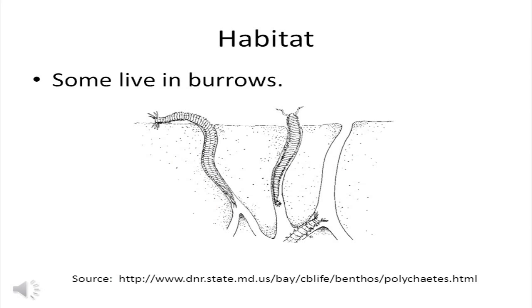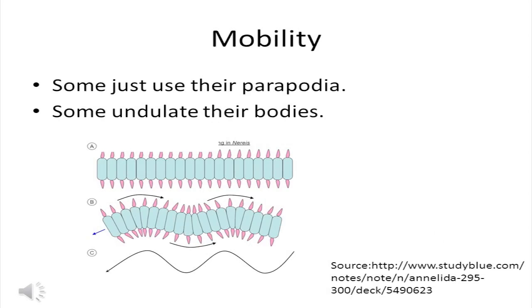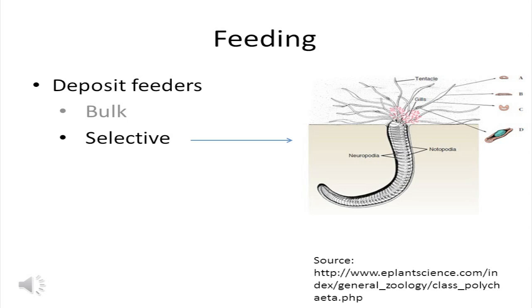Some polychaetes live in burrows. The data on polychaete abundance is noisy; there is no clear pattern with depth. Some places have more than a thousand individuals per square meter; others have just a few tens to a hundred. Many polychaetes are mobile — some use their parapodia and others undulate their bodies. Polychaetes make their living in a variety of ways: a great many are deposit feeders, including bulk deposit feeders. Many deposit feeding polychaetes are selective, using tentacles to reach across the sediment surface and pick up bits of food. Some polychaetes are suspension feeders, and some are carnivores.